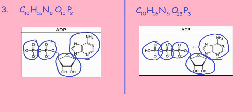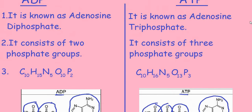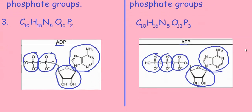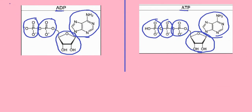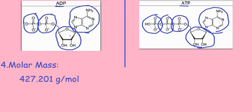Those are the structural differences between ADP and ATP. Moving on to the fourth point: on the basis of molar mass, the molar mass of ADP is 427.2 grams per mole, and for ATP it is 507.18 grams per mole.